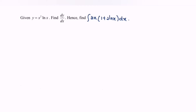Hello everyone. In this video I'm going to discuss the topic of integration. We are given y equals x squared multiplied by ln x. We need to find dy/dx, and hence find the integration of 3x multiplied with 1 plus 2 ln x with respect to x. To begin, we differentiate by letting u equal x squared and v equal ln x.